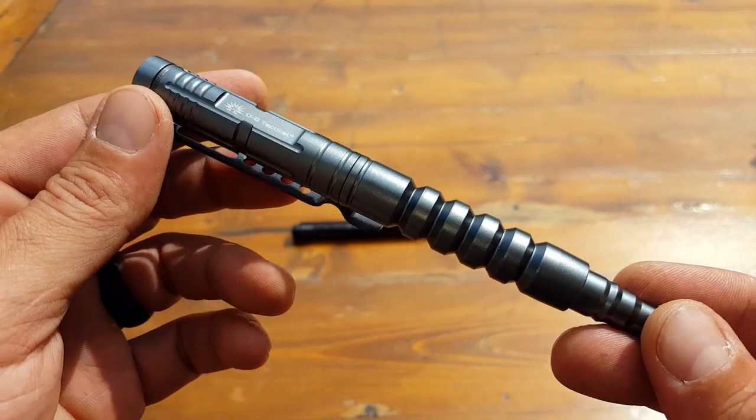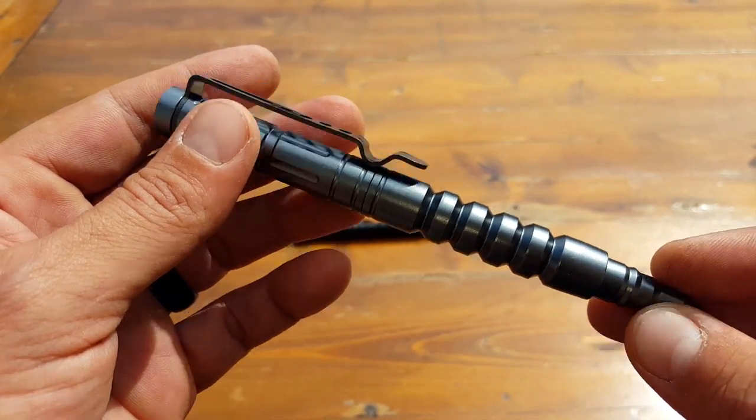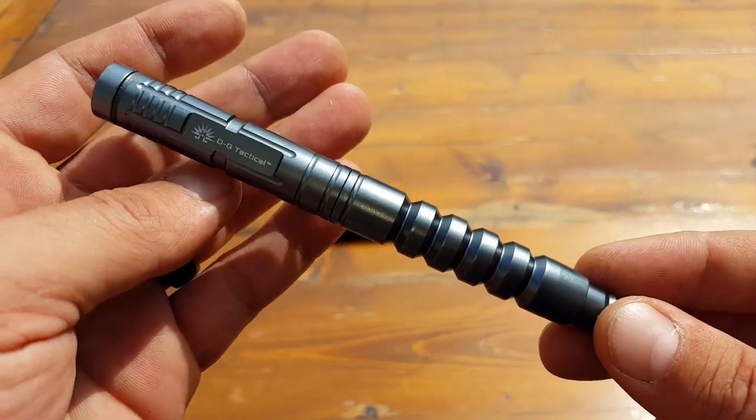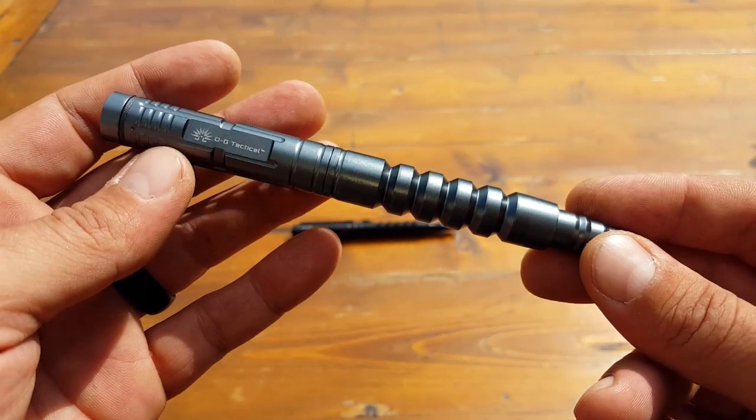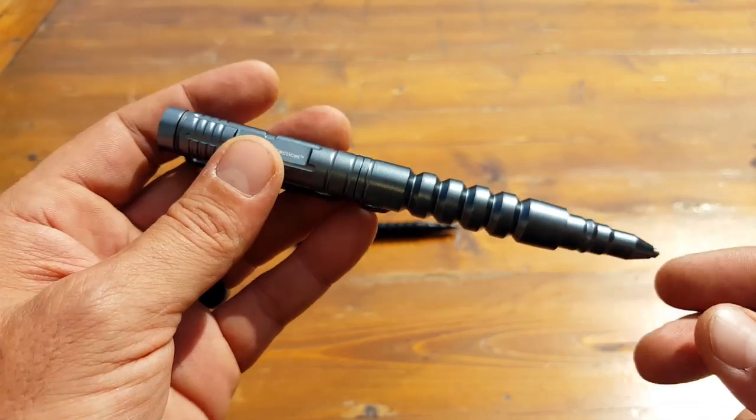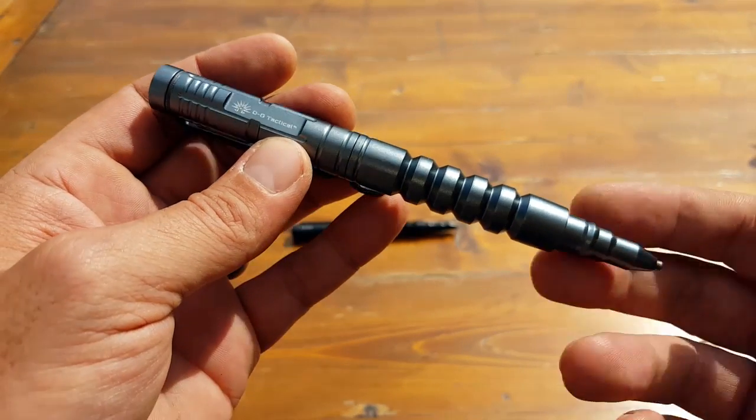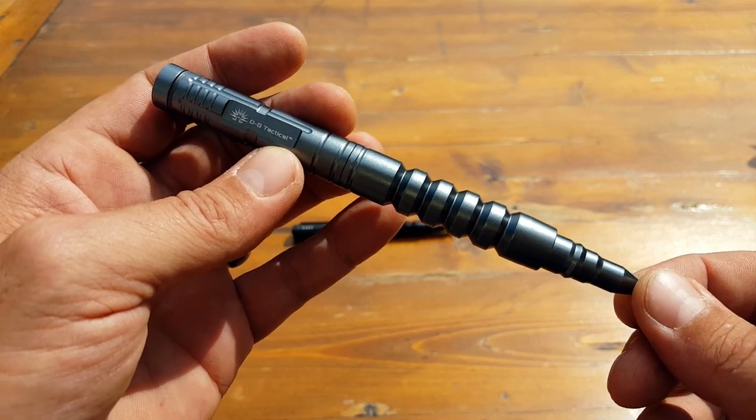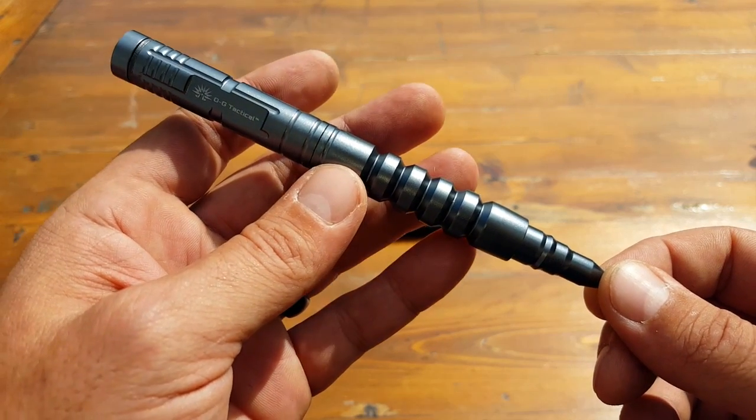We can choose to either have something with us that we train with and are very comfortable with, or we can opt to have nothing. I choose to have something, and in many of those cases a tactical pen is the only option. So let's keep that in mind for the rest of this review.